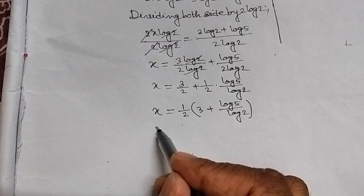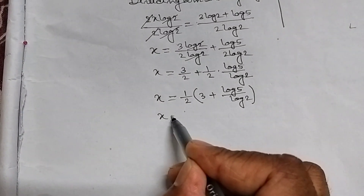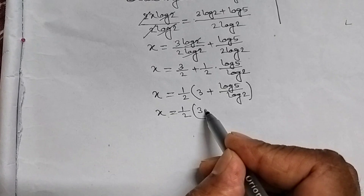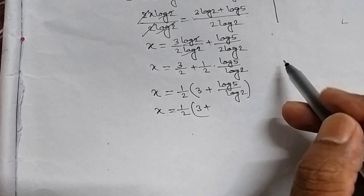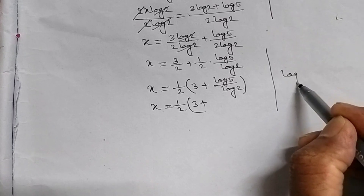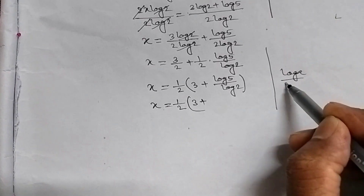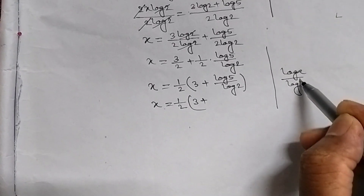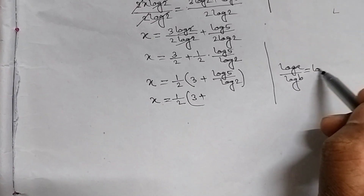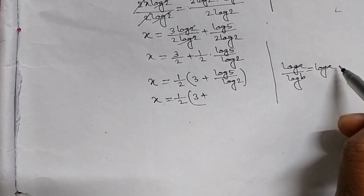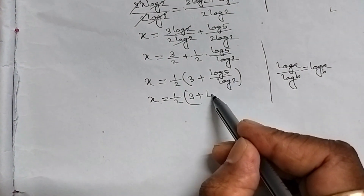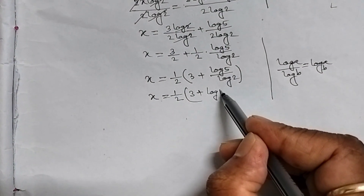Therefore, x equal to 1 upon 2 into 3 plus log 5 upon log 2. Since log 5 upon log 2 is log 5 base 2, this is our required answer.